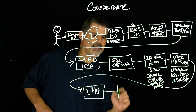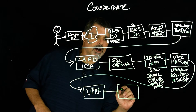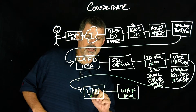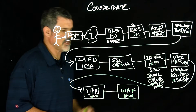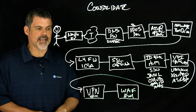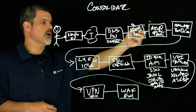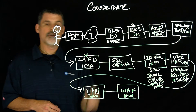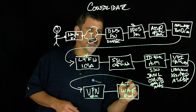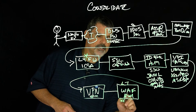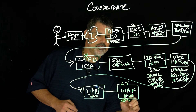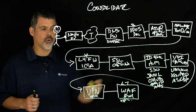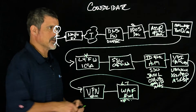And then we have our web application firewall. BIG-IP Application Security Manager (ASM) is your web application firewall. You have your layer 4 firewall here, and then ASM protects at layer 7 — HTTP, HTTPS, and so on — right here at the web application firewall.